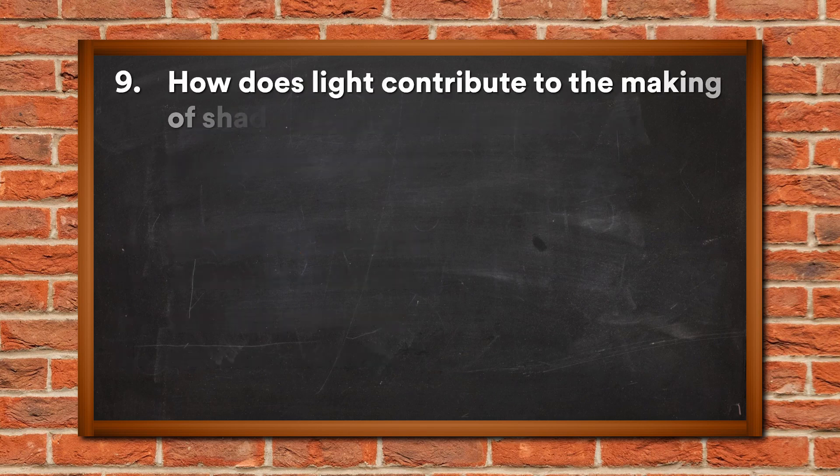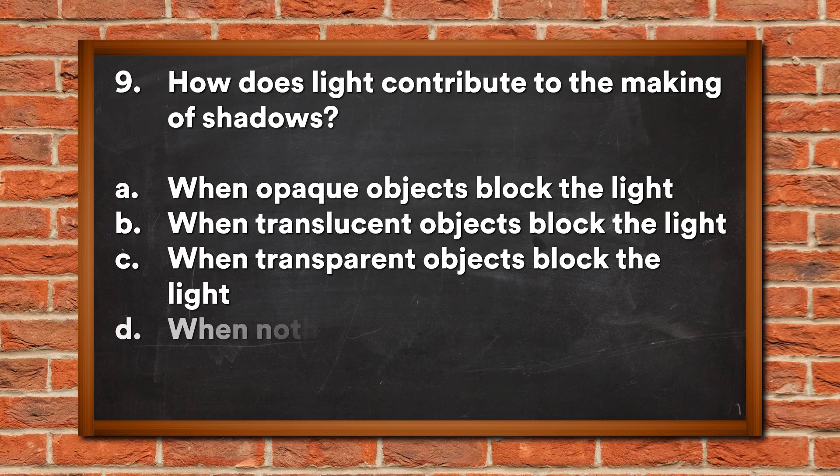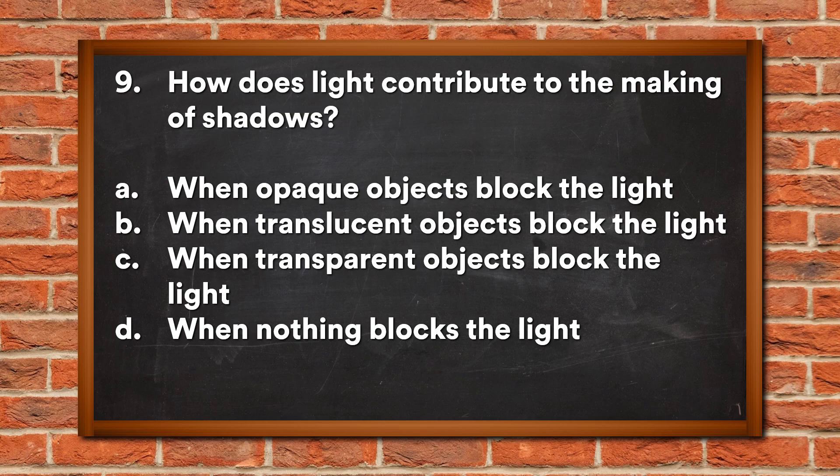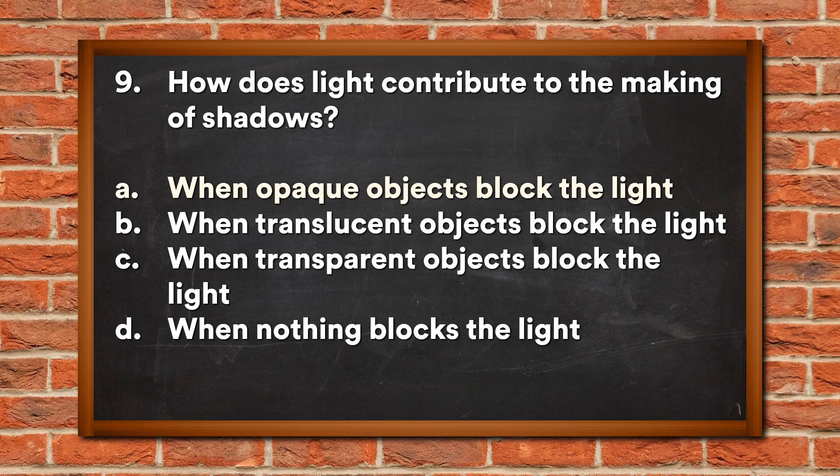Question 9: How does light contribute to the making of shadows? A. When opaque objects block the light, B. When translucent objects block the light, C. When transparent objects block the light, D. When nothing blocks the light. The answer is A, when opaque objects block the light.